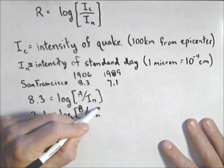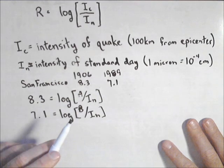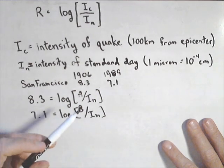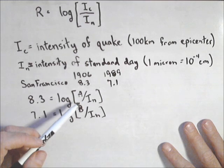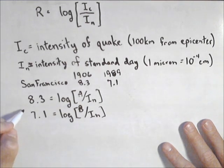We're not actually going to find out what A and B are. We could because we do know I sub n, it's a given. But we're going to find out how many times more intense. And it turns out we don't even need to find out what A and B are because we can use a property of logs.